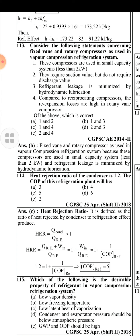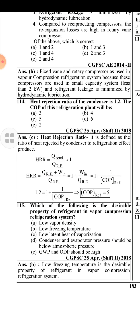The heat ejection ratio of the condenser is 1.2. The COP of the refrigeration plant relates to the heat rejection ratio, which is defined as the ratio of heat rejected by the condenser to the refrigerating effect produced. Heat rejection ratio equals Q-condenser divided by the refrigerating effect, or Q-condenser equals Q-refrigerating effect plus W-input.